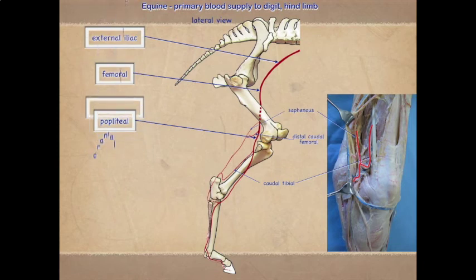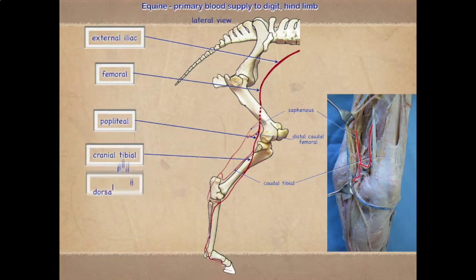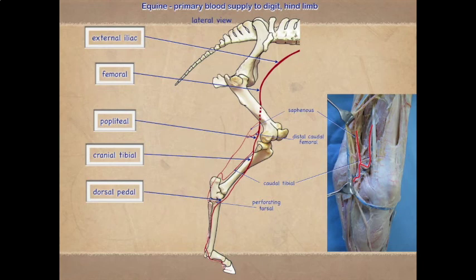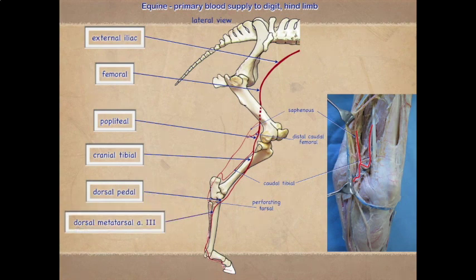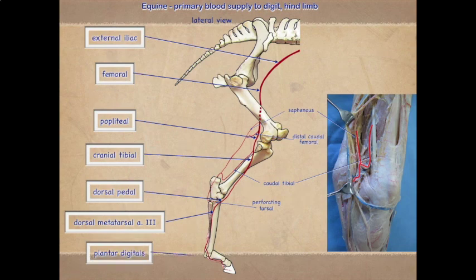Our main supply is the cranial tibial artery, which continues distally and changes its name to dorsal pedal. The dorsal pedal then gives off a perforating tarsal artery which actually goes between the bones of the tarsus. After that it continues as the dorsal metatarsal artery 3. Notice that dorsal metatarsal artery 3 is running between the cannon bone and the lateral splint bone, and then just near the distal end of the splint bone it courses more plantarly and divides into our medial and lateral plantar digital arteries.